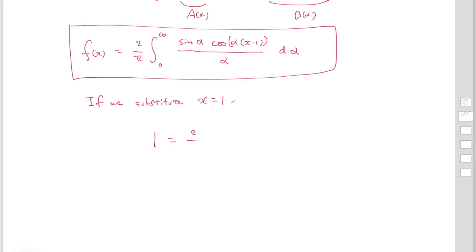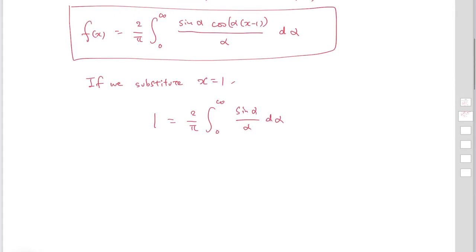...2 over pi times the integral from 0 to infinity of sin(alpha) over alpha d alpha, since cos(0) equals 1. From this equation, we obtain an interesting result: the integral from 0 to infinity of sin(alpha) over alpha d alpha equals pi over 2.